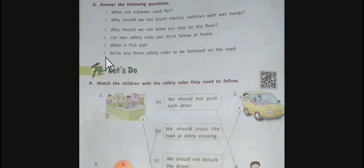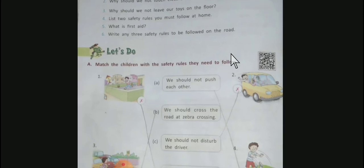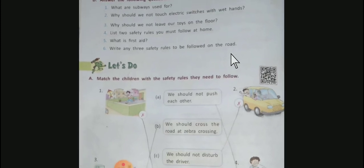Question number six: Write any three safety rules to be followed on the road. Answer: Do not play or run on the road. Always walk on footpath and cross the road through a footbridge.